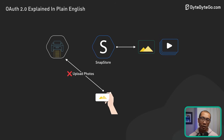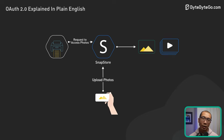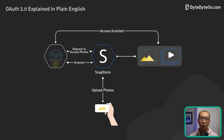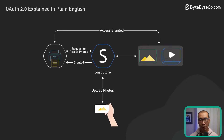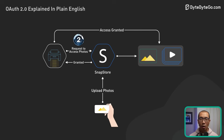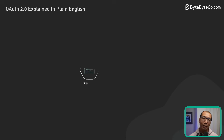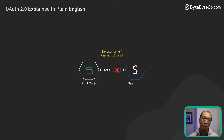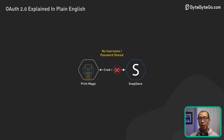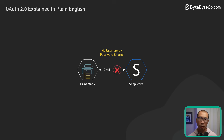With a simple click, we grant PrintMagic permission to access our photos on SnapStore. Using OAuth 2, PrintMagic can then access our SnapStore photos on our behalf without ever knowing our SnapStore login credentials.